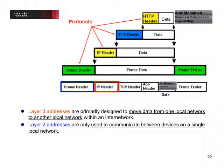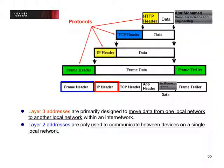We have three or four types of addressing that we will talk about. The most important one is layer three addresses, which we refer to as IP addresses. These are used to move data from one local network to another local network.